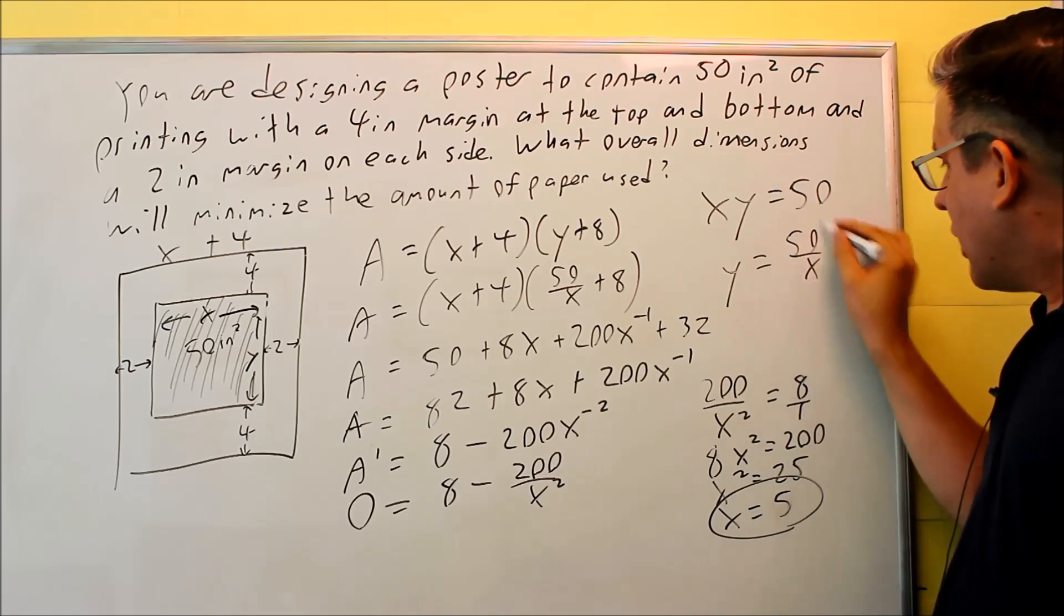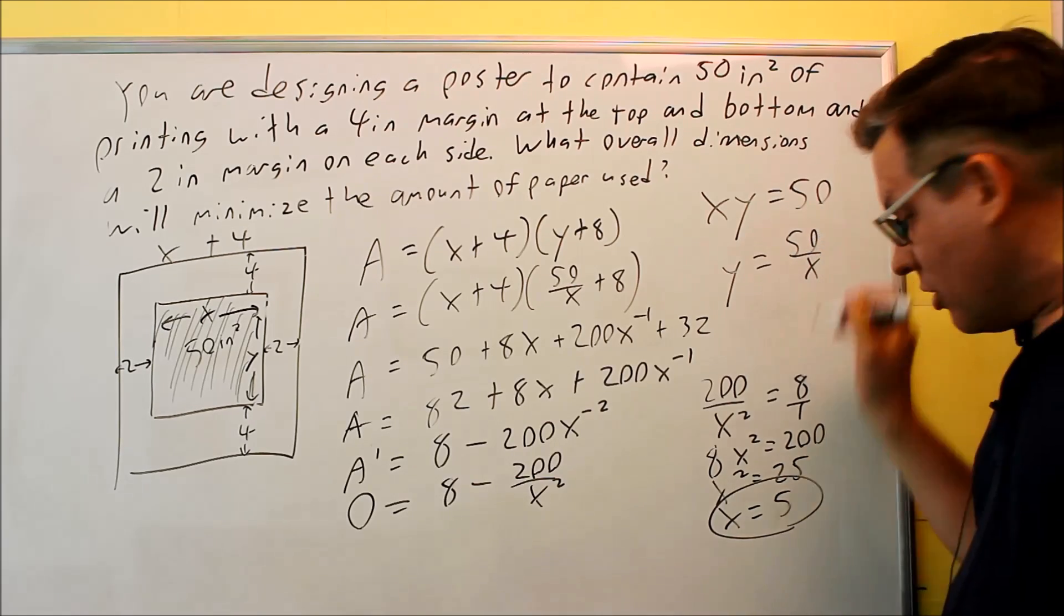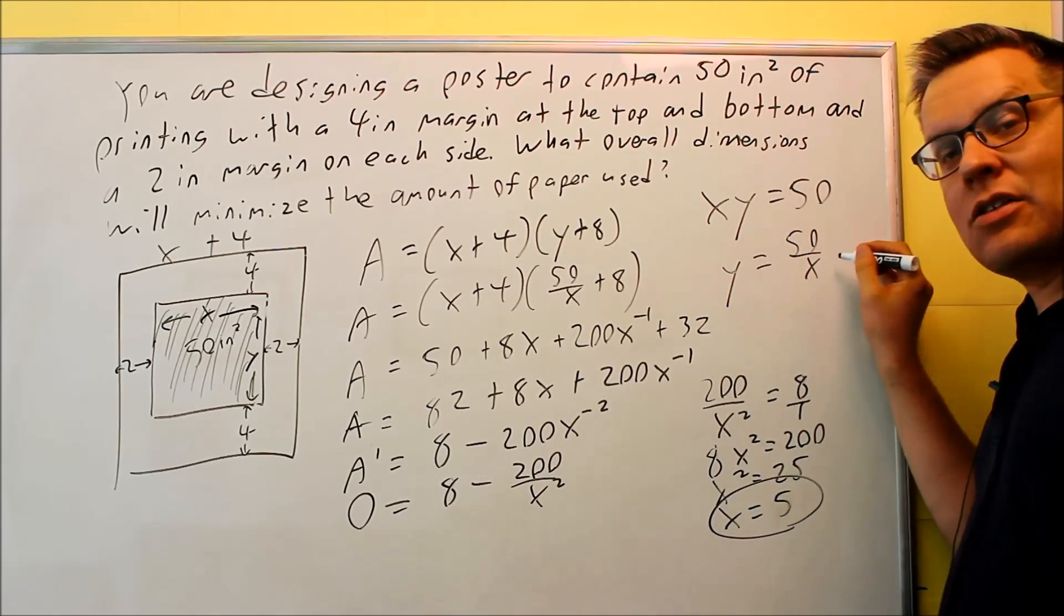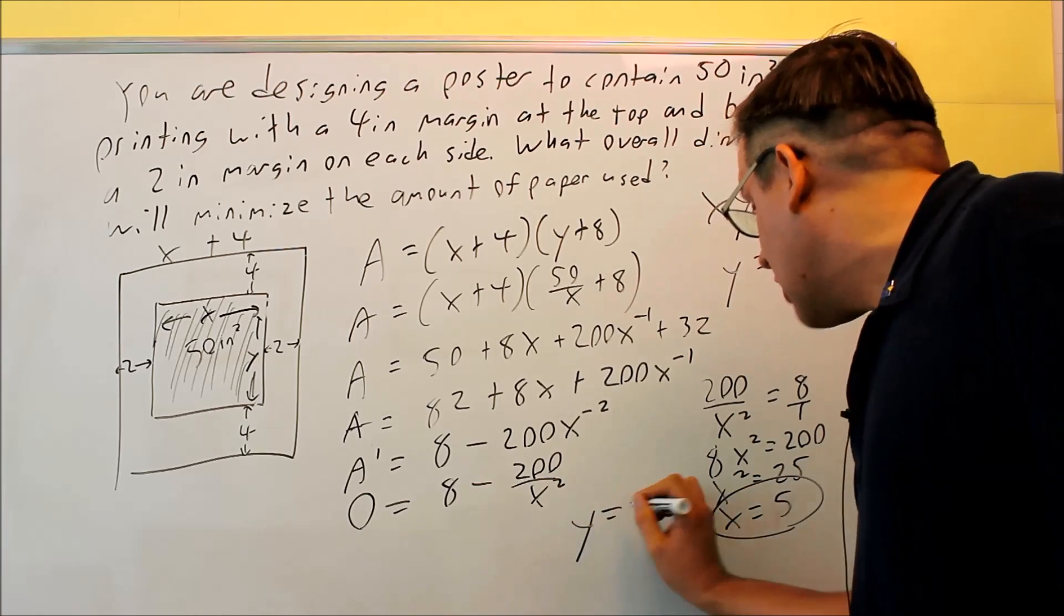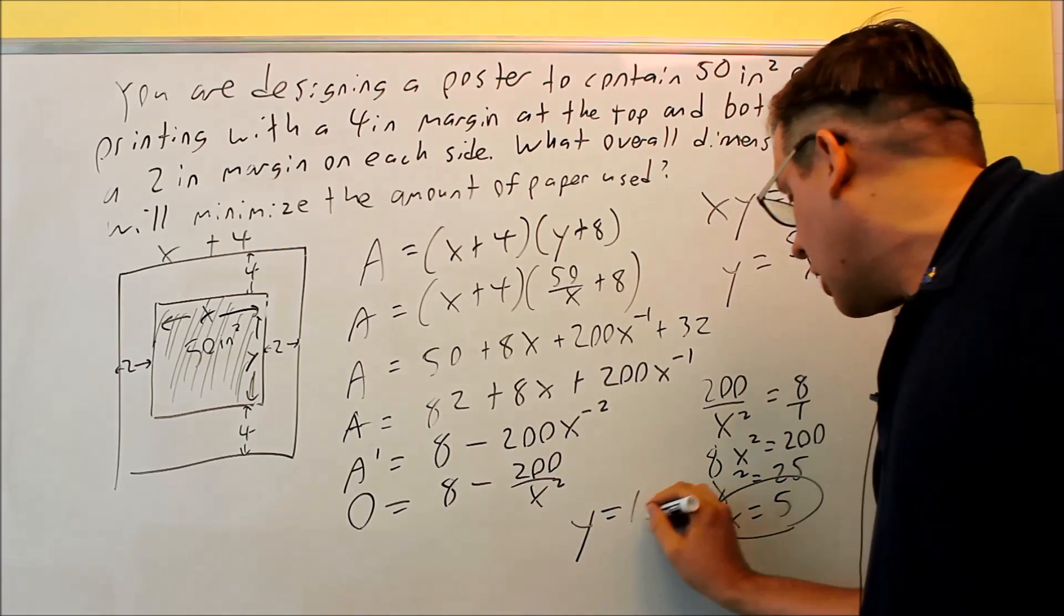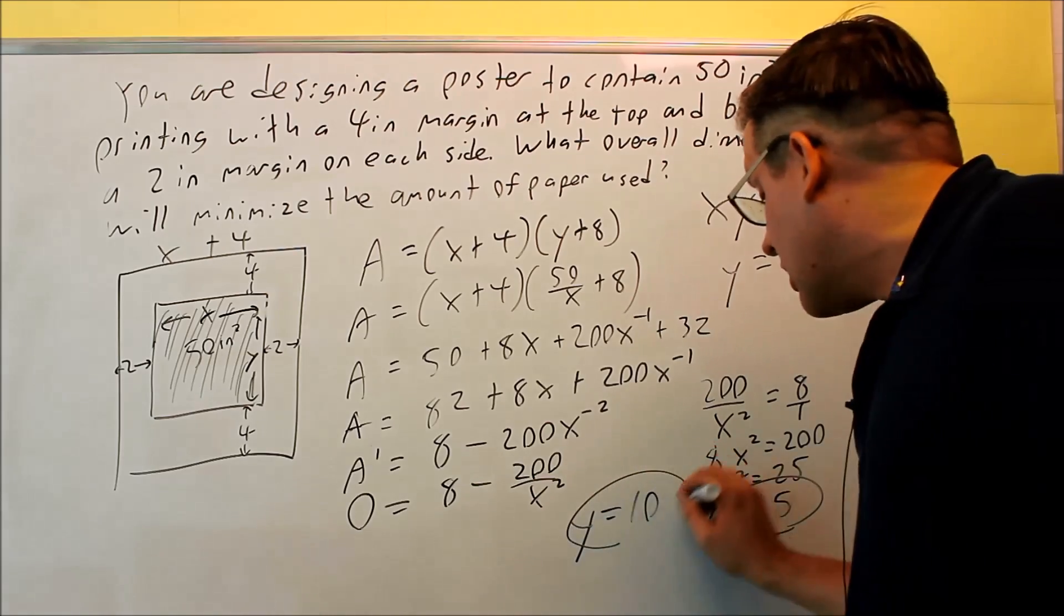Now because x is 5, I can put that into here, and I can get the y value. So if I put 5 back into here, y is equal to 50 over 5. My y is equal to 10.